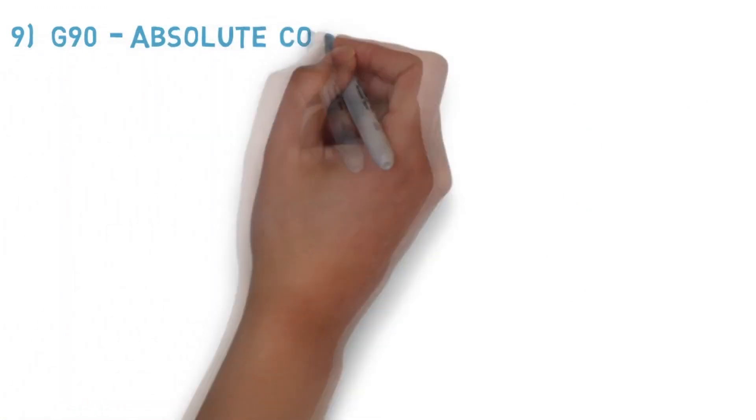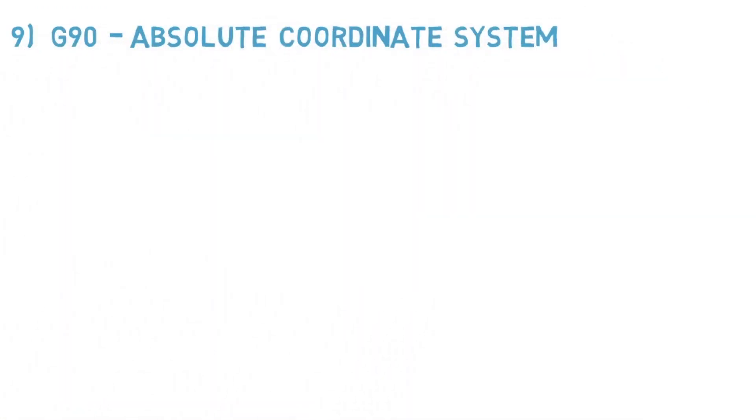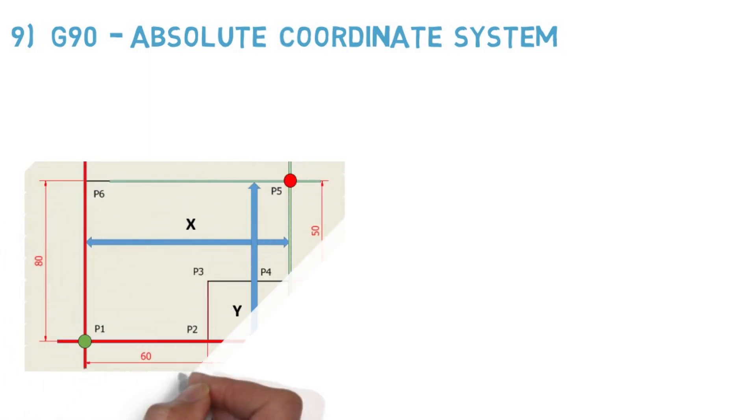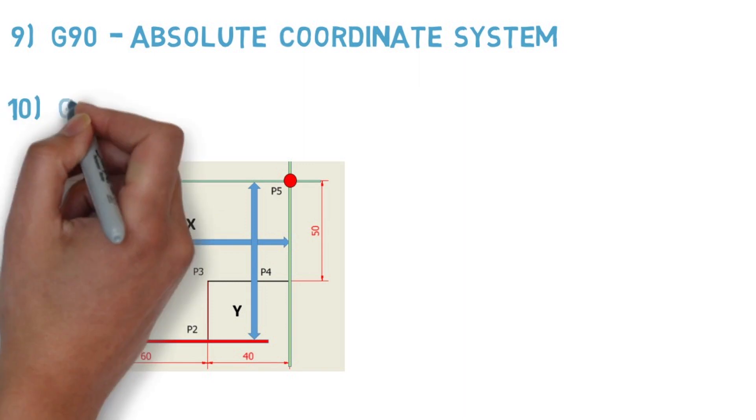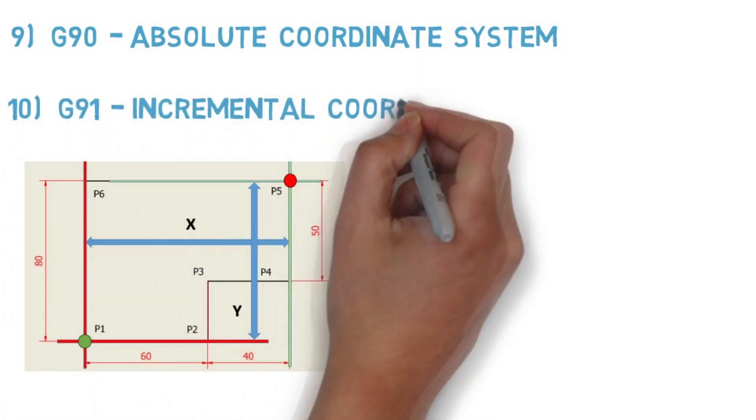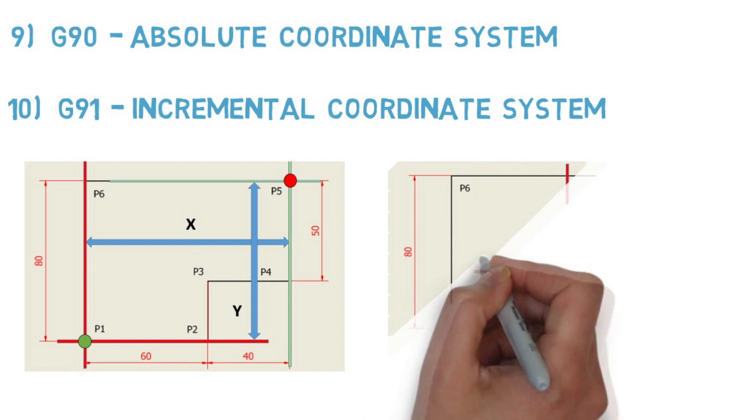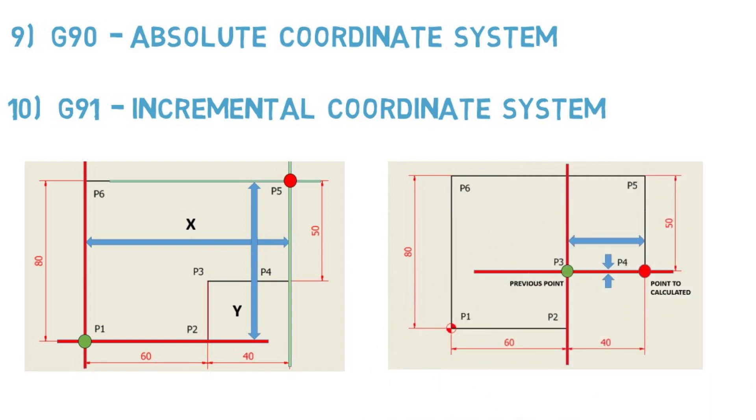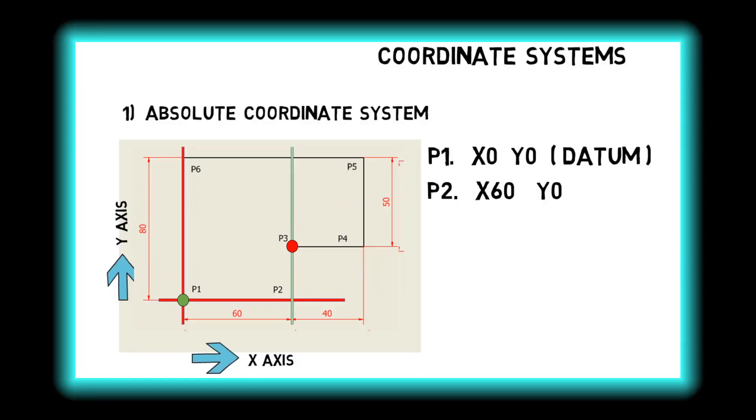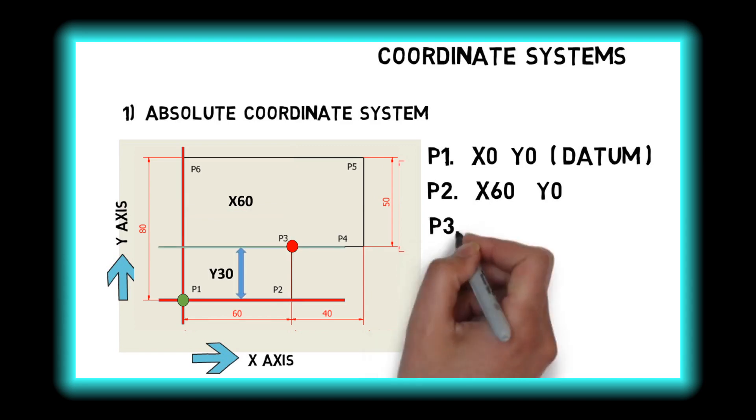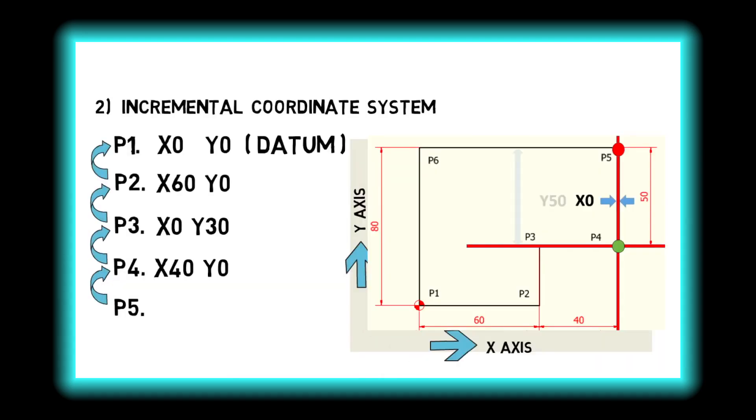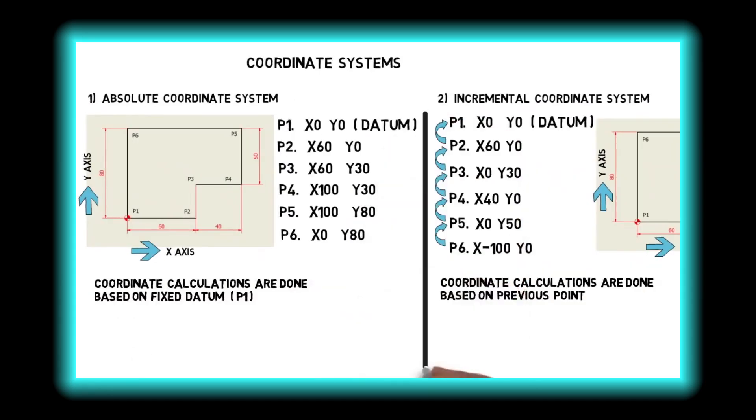Number nine, G90 - Absolute coordinate system. In absolute coordinate system, the coordinate calculations are done based on a fixed datum. Number ten, G91 - Incremental coordinate system. In incremental coordinate system, axis movements are done based on previous positions. Absolute and incremental coordinate calculation methods are clearly explained in our previous video. The tutorial link is in the description.